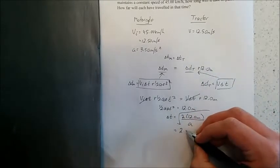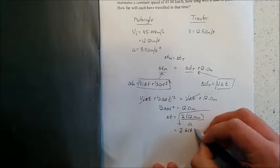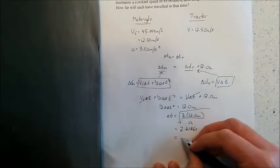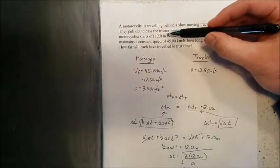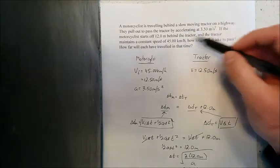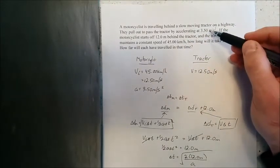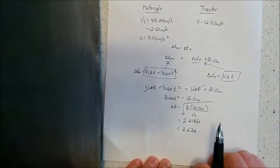I plug all this stuff in. I'm going to get 2.6186 seconds and then sig fig that to 2.62 seconds, because the measurements I had initially - 12 meters, 45.00 and 3.50 - the least amount of sig figs is 3. So I'm going to round my answer to 2.62.